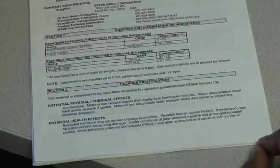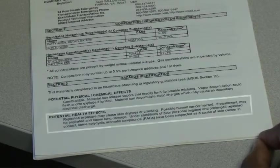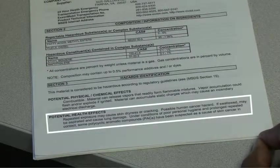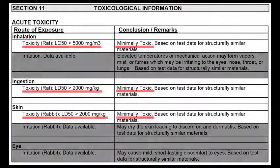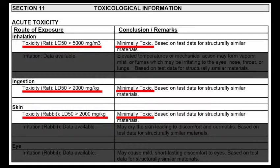This MSDS indicates diesel fuel has both acute or immediate health effects and chronic or long-term health effects. The acute toxicity of diesel fuel, as measured by the lethal dose required to kill 50% of a laboratory test animal population, is considered minimally toxic. This is evident from the very high doses required to kill test animals by each exposure route: inhalation, ingestion, and skin contact.